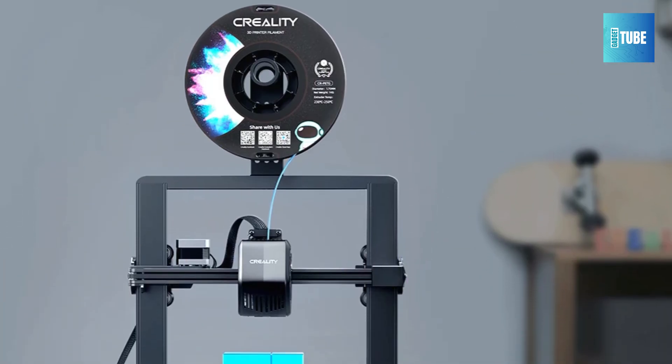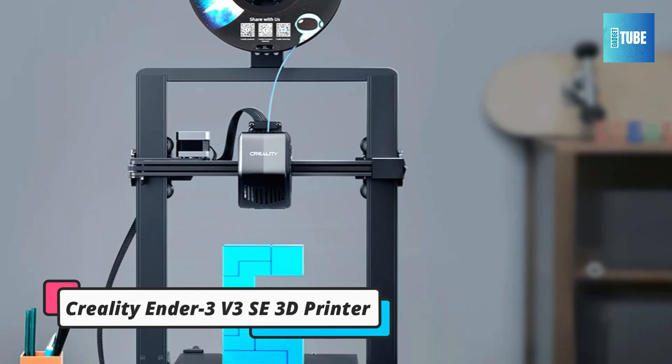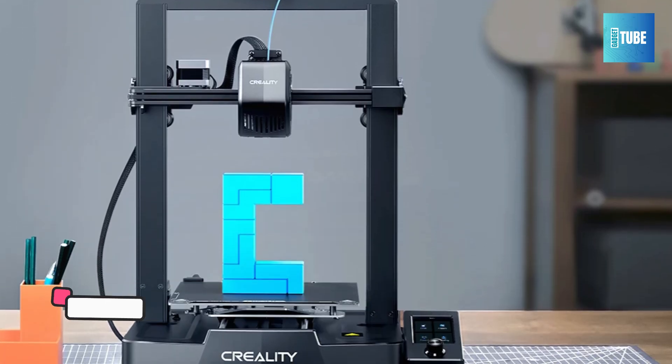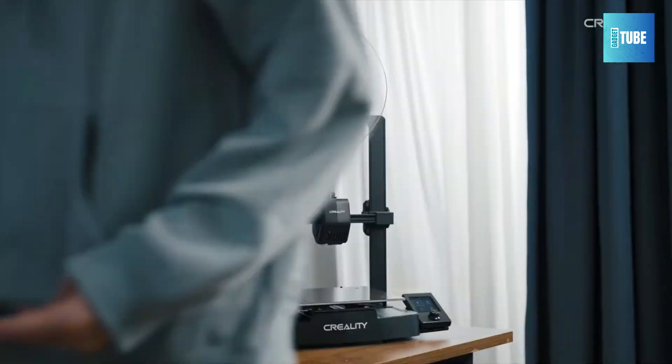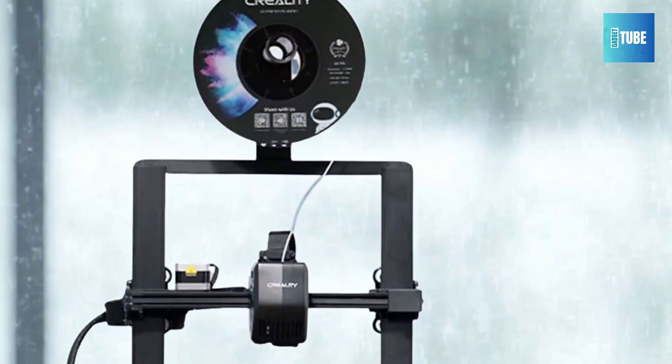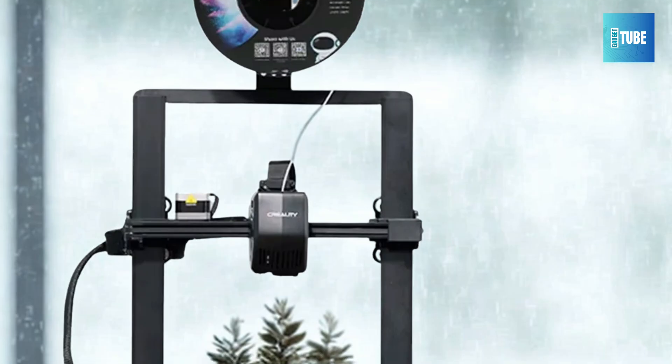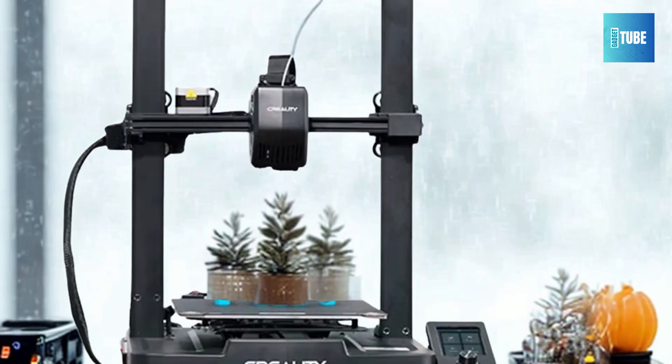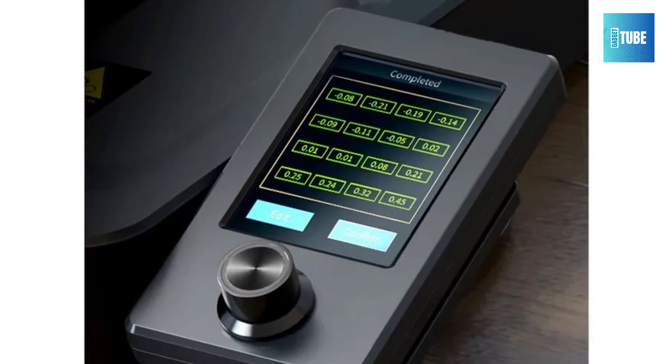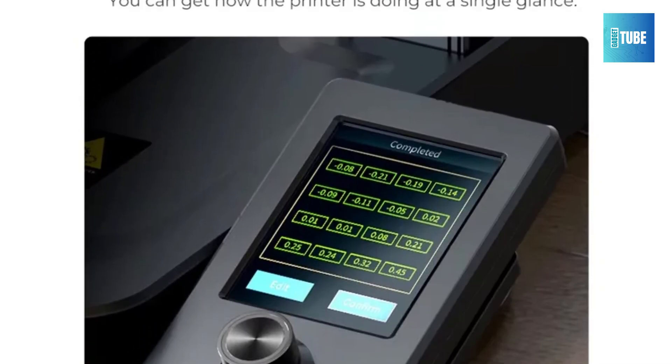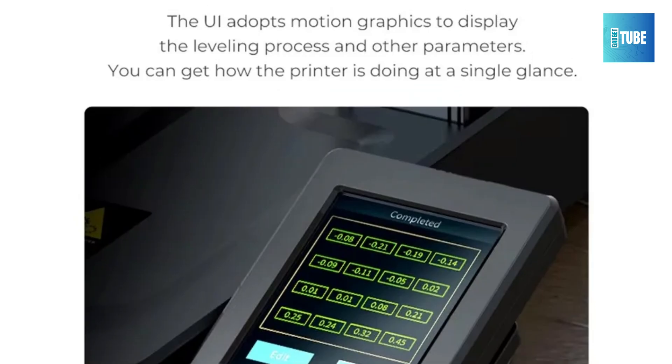Number 1. Creality Ender 3 V3 SE 3D Printer. The Creality Ender 3 V3 SE, a versatile 3D printer designed for home projects and DIY fans. It offers a reliable printing speed of up to 250mm per second with precise layer thickness from 0.1 to 0.35mm. The hands-free auto-leveling feature simplifies setup, making it beginner-friendly.